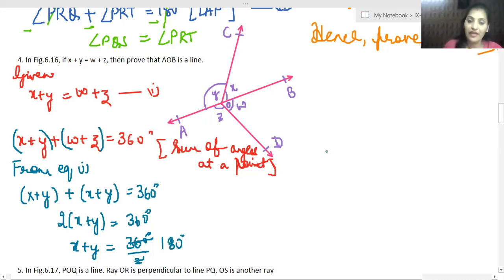Okay, so when this becomes our reverse theorem, it's an axiom actually, not a theorem. According to that, when two adjacent angles sum is 180 degrees, then the line on which they lie, that is a straight line. So therefore, AOB is a line.